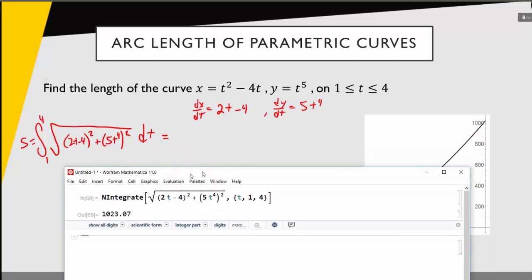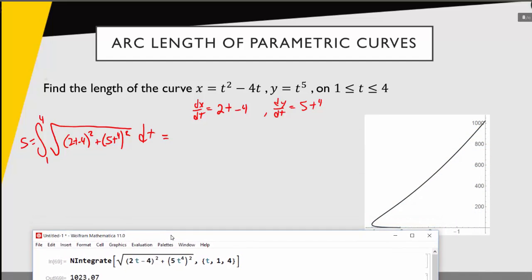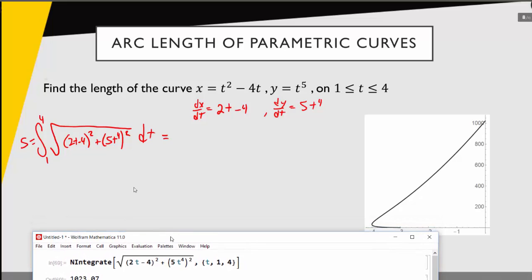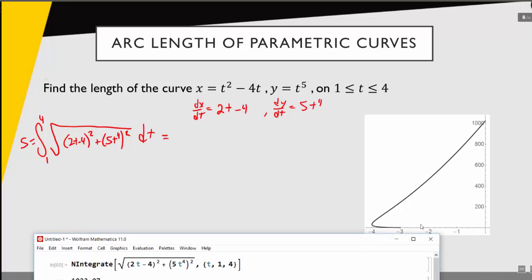And I also want to take a moment to look back at that curve to see if that value makes sense. 1023. And here I can see that I'm going from a range of x values, it looks like it's between 0 and negative 4 here. But my y values go from 0 up to more than 1000. So it makes sense the length of this curve would be a little bigger than 1000.